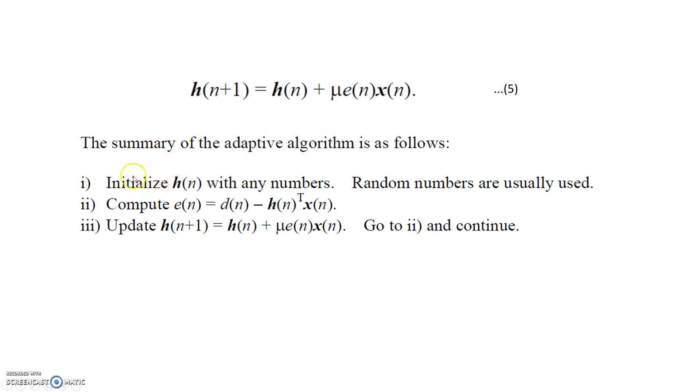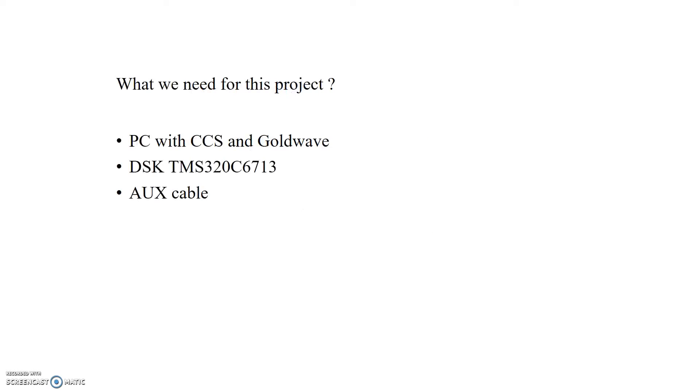If we look at the summary of this adaptive filter, we will have to initialize h(n) before. It can be any number, it can be a random number, or the h(n) can be zero initially. Then we will calculate error, then update those coefficients. These two steps are repeated until we get the minimum value of error.